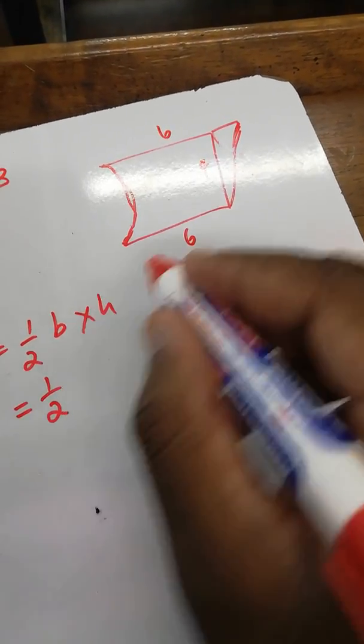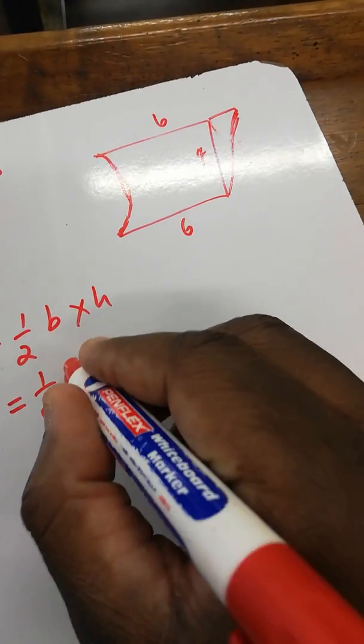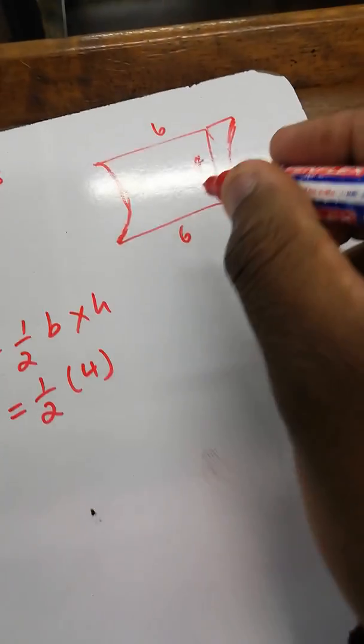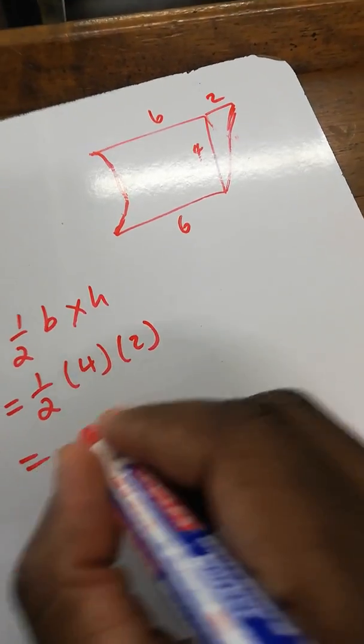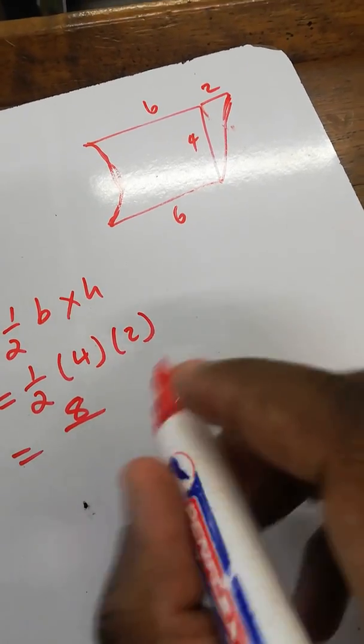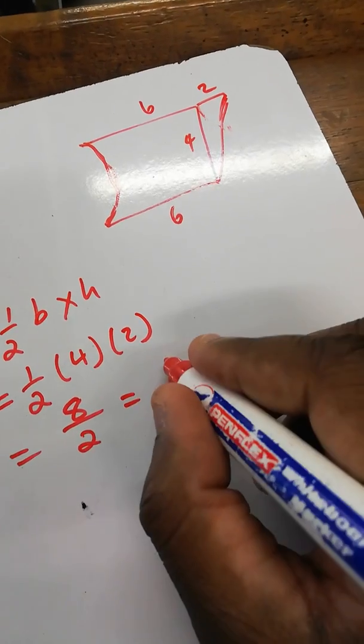Our base is four, multiplied by height which was two. This gave us eight over two, which equals four centimeters squared. Your lecturer noted you made a mistake by not writing centimeter squared.